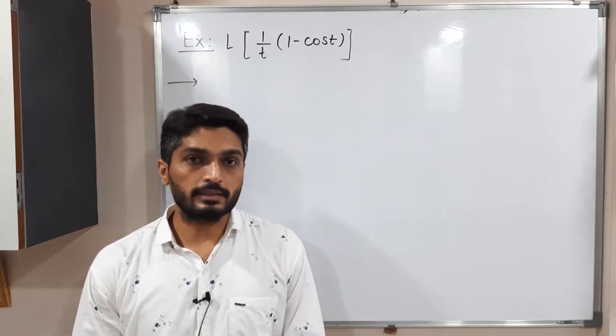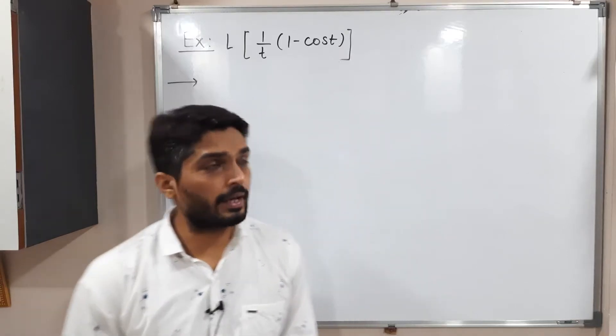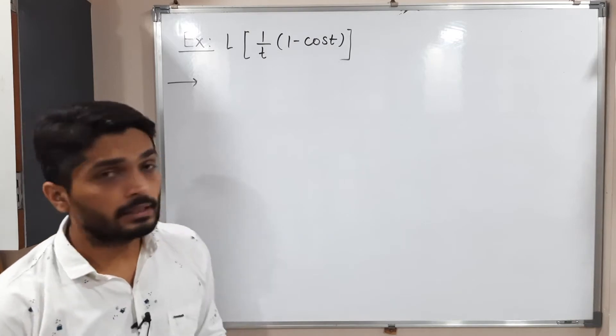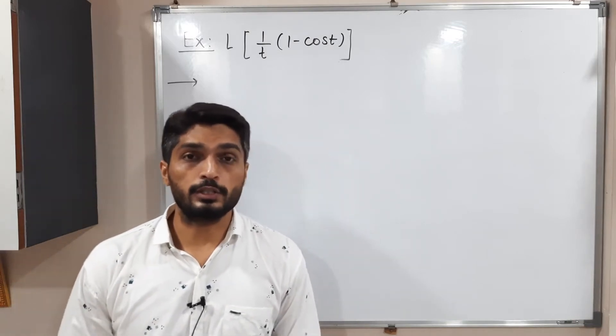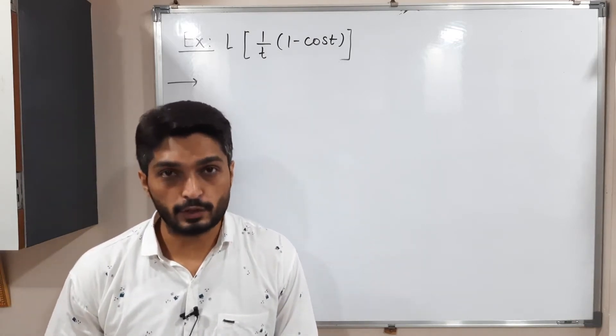Hi everyone. Let us discuss this example. We have a function one by T in bracket one minus cos T, and we have to find its Laplace transform.